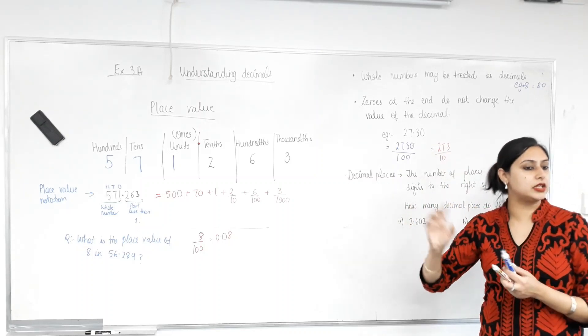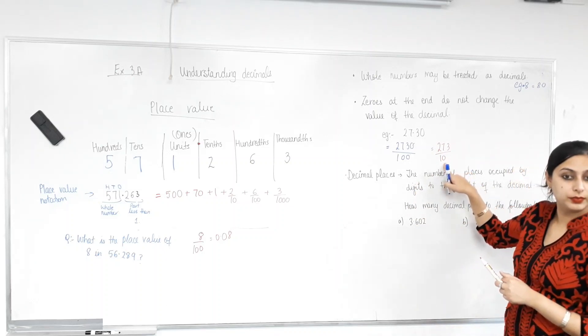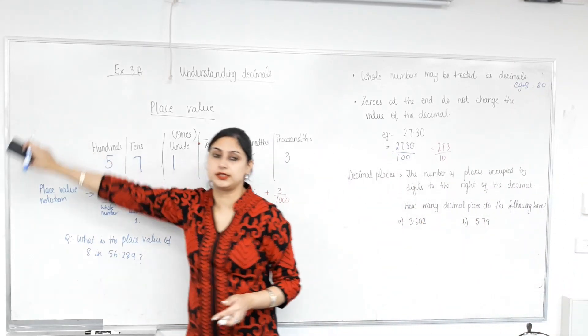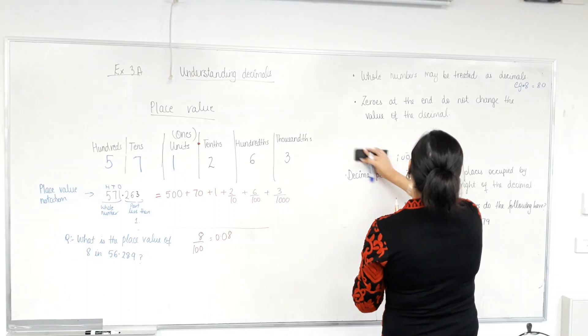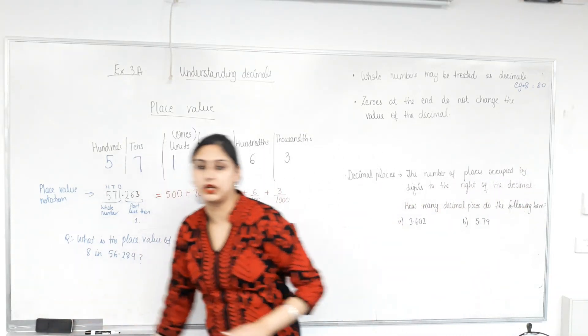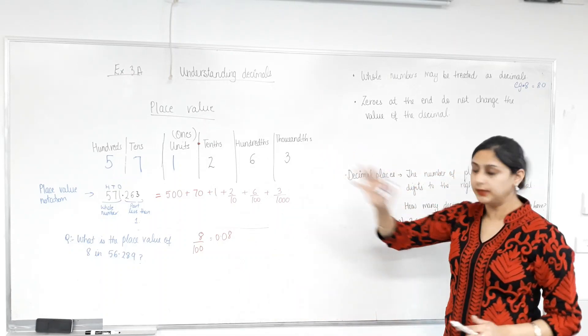Now, if I was to convert it back into a decimal, how many decimal places would this number have? One. Okay. You know what? People are getting confused. We'll talk about it in another lesson. Another lesson. Another lesson. Do we understand this bit, the place value part today? Okay.